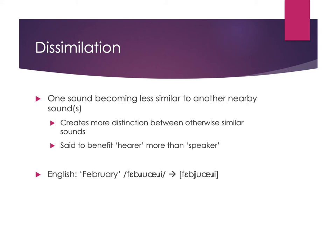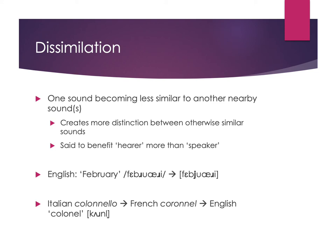Another example of dissimilation over time is the word 'colonel'. Italian had the original word 'colonnello'. French borrowed it and went through dissimilation to get 'coronel', where the first L became an R to dissimilate from the later L and R. English kept the French pronunciation when borrowing the word, but got the spelling from Italian. So if you've wondered why 'colonel' is spelled with an L at the beginning but pronounced with an R, our spelling came from Italian while our pronunciation came from French.